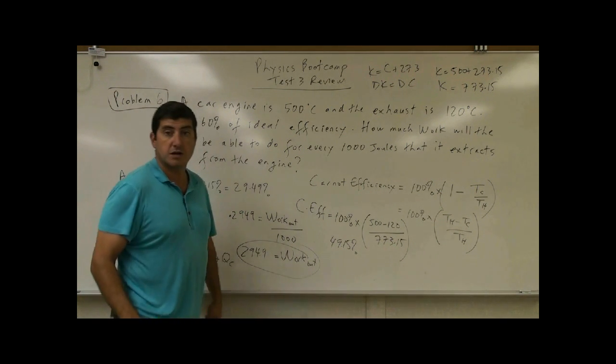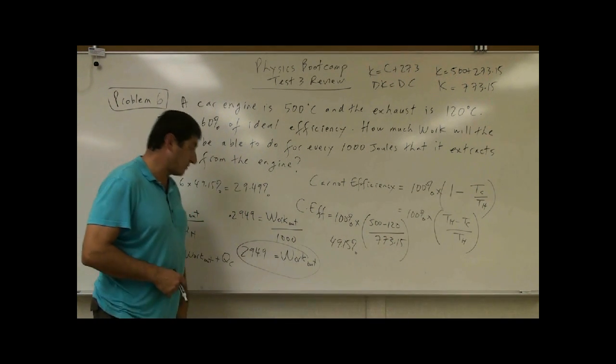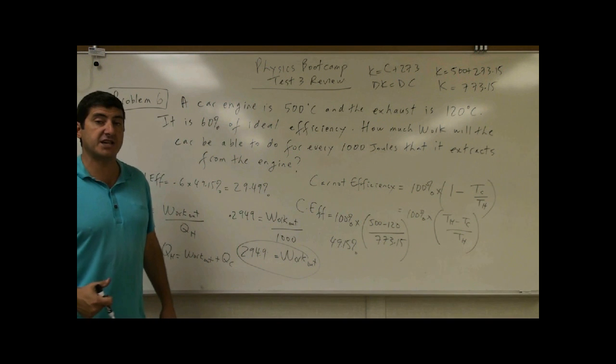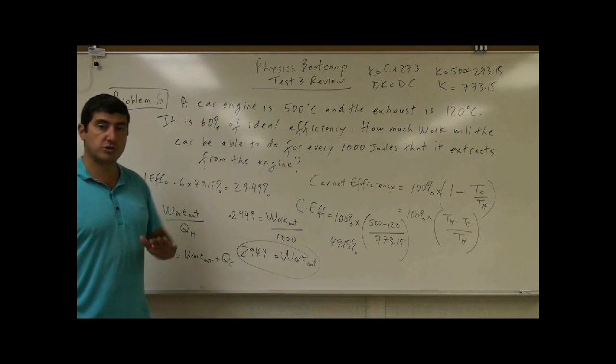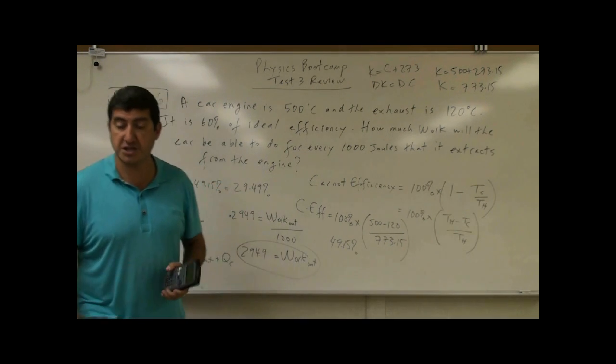And you get 294.9 joules. So that is the answer. So for every thousand joules that it gets from the engine, 294.9 joules of work is being done.